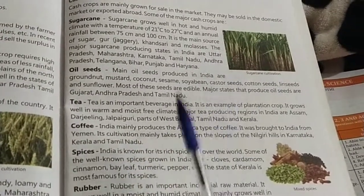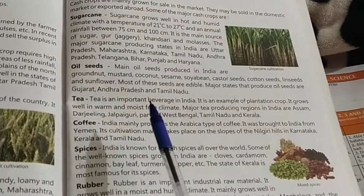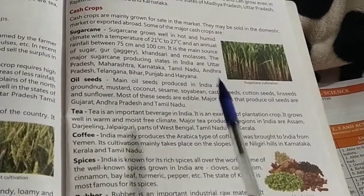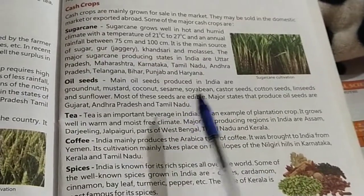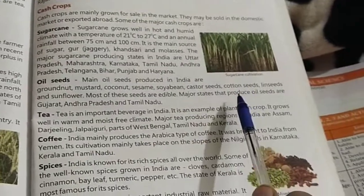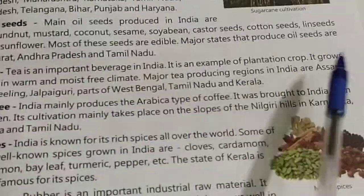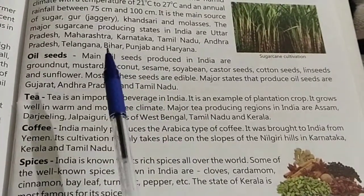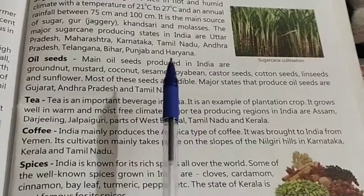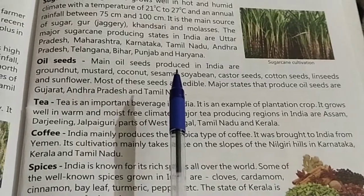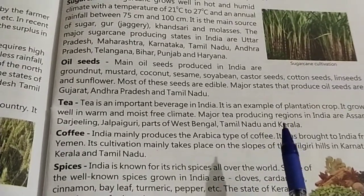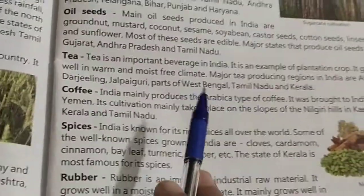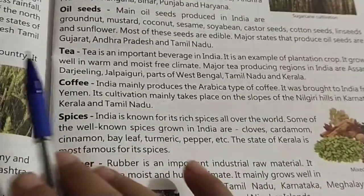Oil seeds are used for cooking and other purposes. Major oil seeds produced in India are groundnut, mustard, coconut, sesame, soybean, castor seeds, cotton seeds, linseed, and sunflower. Most of these are edible, and the oil from these seeds helps our immune system.